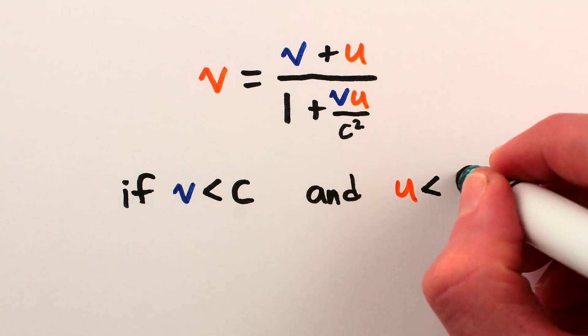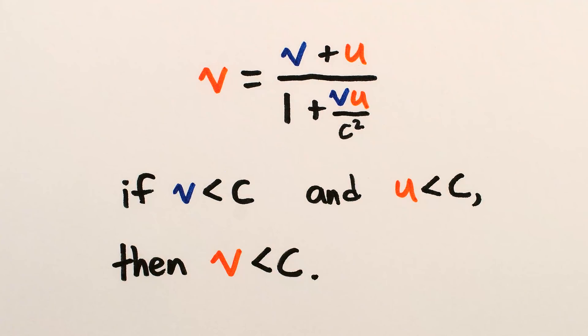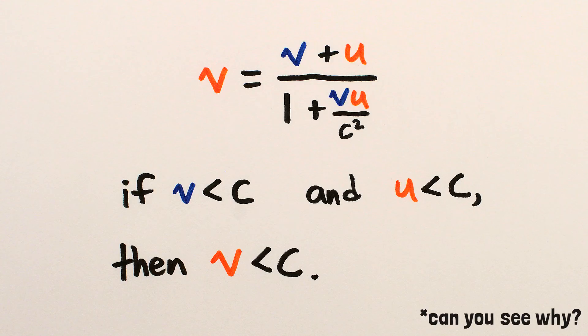And you'll notice that if both velocities are less than the speed of light, then the equation always gives back an answer less than the speed of light, which is what we were describing earlier about relative speeds never adding up to a speed faster than light.